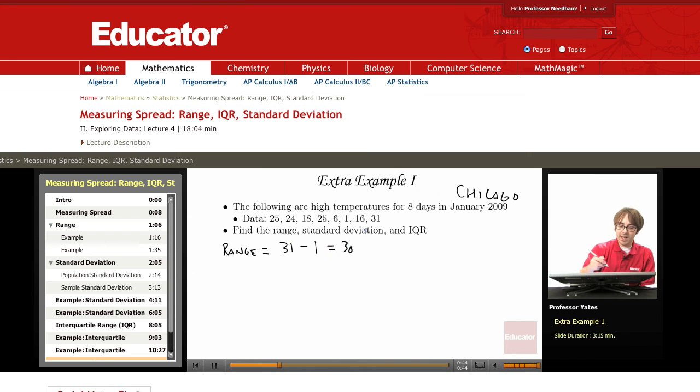Now for the standard deviation. This is a sample because there's more than eight days in January, so n equals 8. I want to add up my observations: 25 plus 24 plus 18 plus 25 plus 6 plus 1 plus 16 plus 31. When I add those up, I get 144.